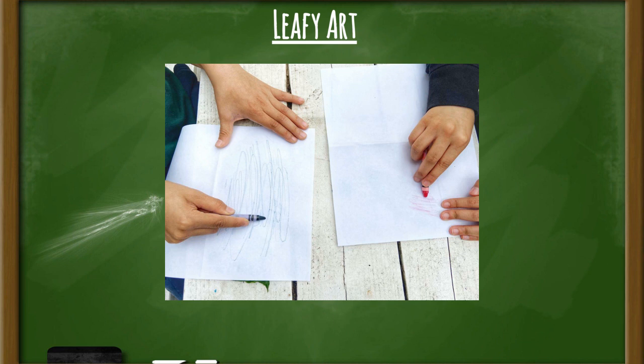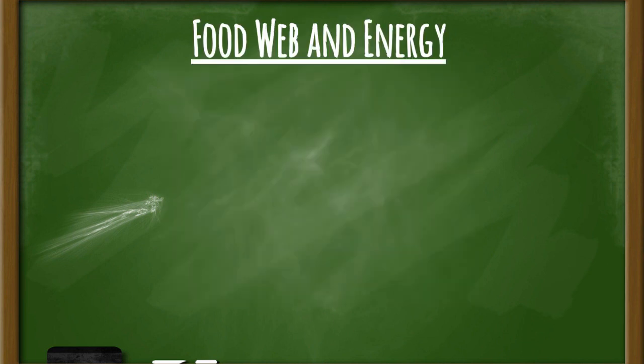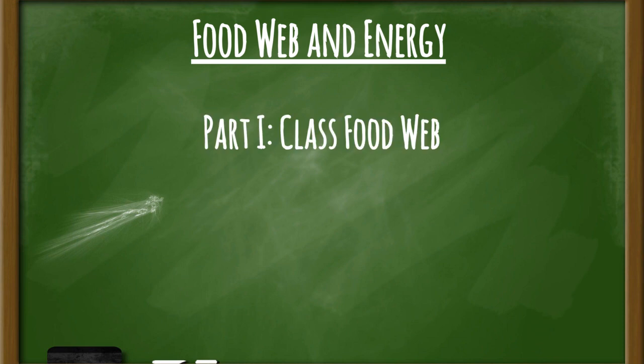Once your pictures are completed, come back. Today we're going to explore more with food webs and energy. This is broken down into two different parts. Part one is called the Class Food Web, and it will be broken down into five different steps.